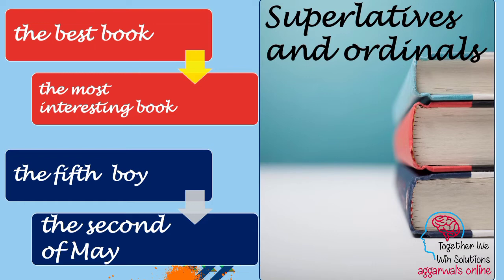We also use 'the' before ordinals. For example, when we speak about dates: 'the 2nd of May', 'the 11th of May', 'the 20th of July'. These are ordinals, and article 'the' is used before them.